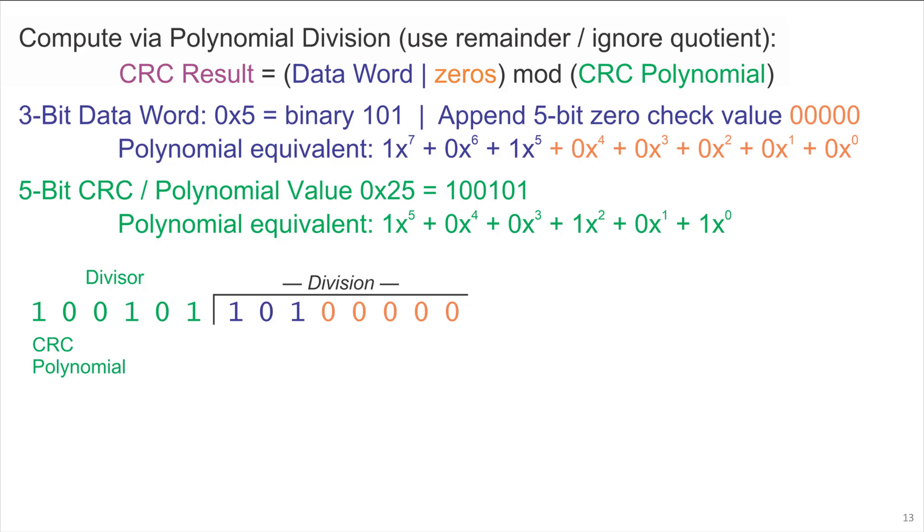As with any long division, you first do a trial subtraction and see if the result fits into the remaining dividend. In this case, the divisor 100101 does fit, so we do a subtraction.